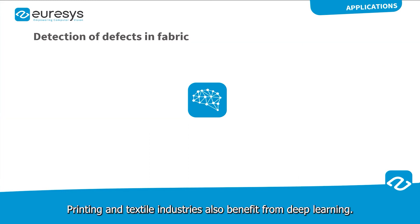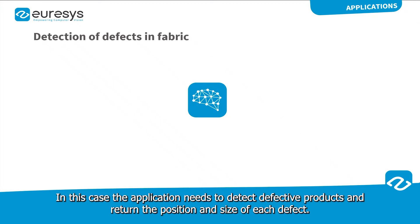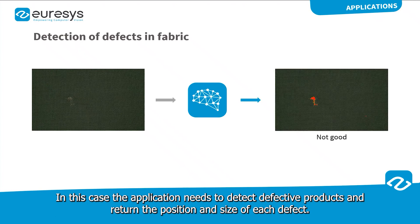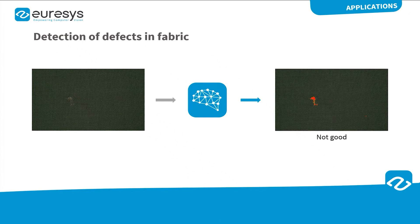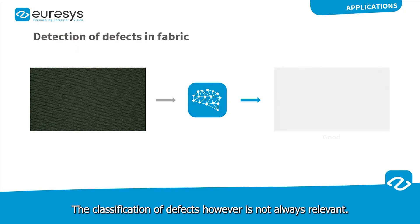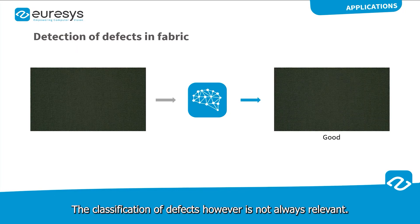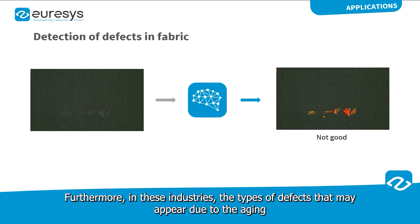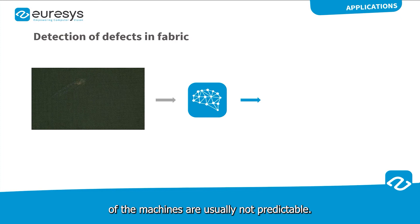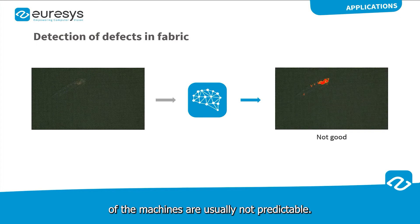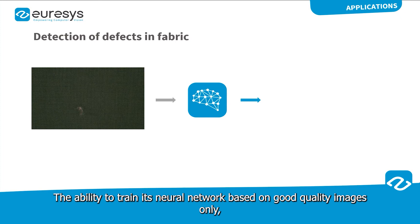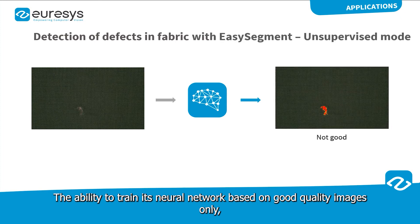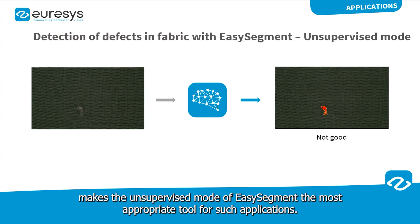Printing and textile industries also benefit from deep learning. In this case, the application needs to detect defective products and return the position and size of each defect. The classification of defect, however, is not always relevant. Furthermore, in these industries, the types of defects that may appear due to the aging of the machines are usually not predictable. The ability to train its neural network based on good quality images only makes the unsupervised mode of EasySegment the most appropriate tool for such applications.